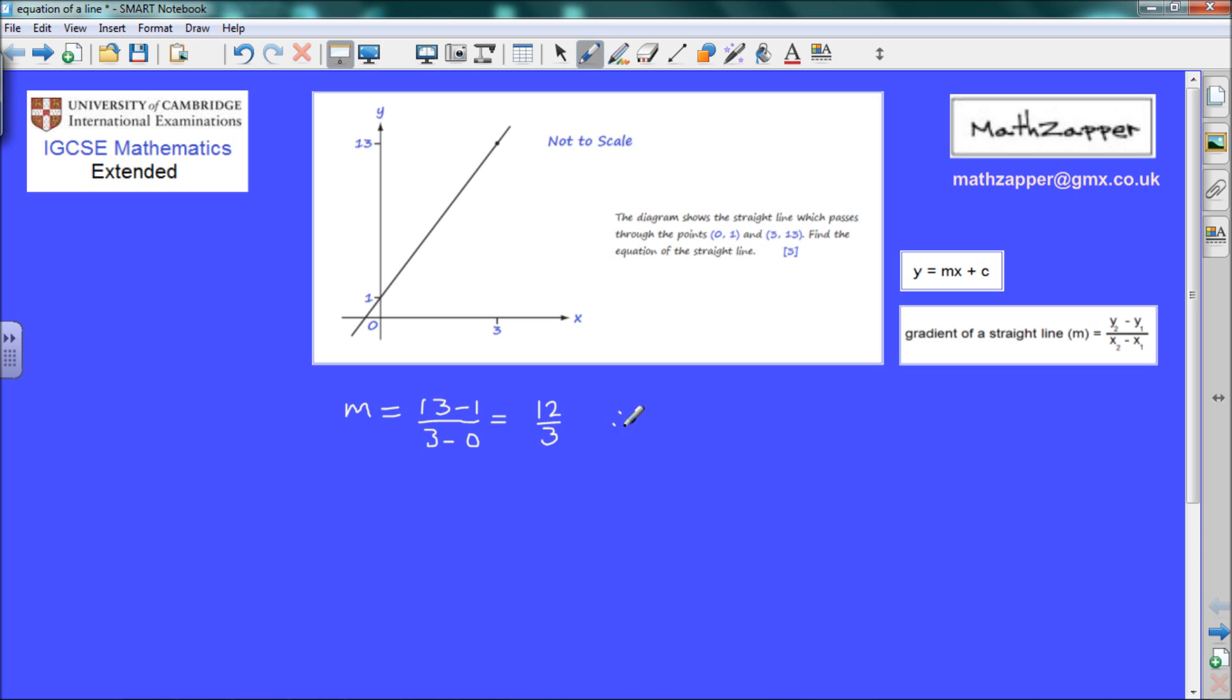Therefore m, the gradient, is equal to 12 divided by 3, which is 4.